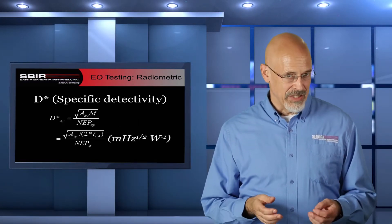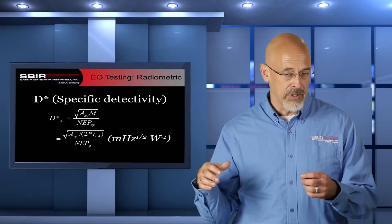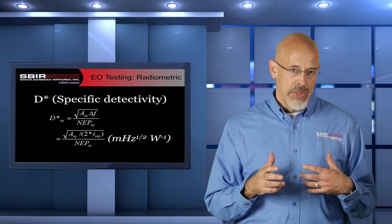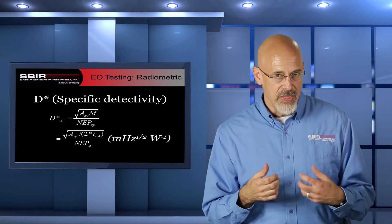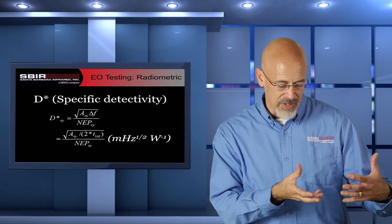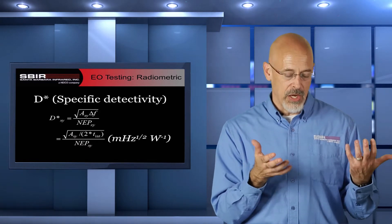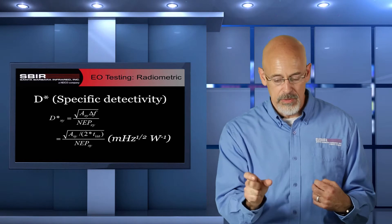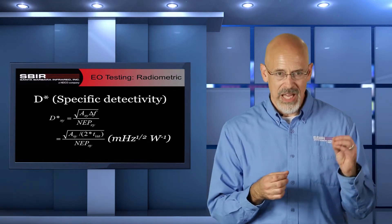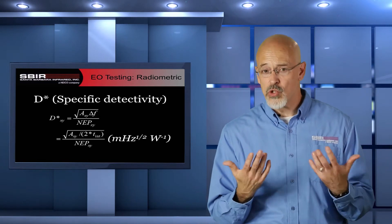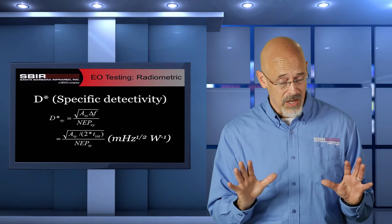Finally, we come to D* — or specific detectivity. The formulation is pretty straightforward: we are taking the noise equivalent power and normalizing it to the area of the detector and the bandwidth of our signal measurement system. These two come into play so that what we end up with is a unit of meter root hertz divided by watts. This allows D* to be higher with better sensors, as opposed to most noise measurements where better sensors produce smaller noise values. It also takes into account the bandwidth of your electronics. The problem is D* is rarely used anymore — it's an older measurement important when we had single element detectors. Now that we're talking about focal planes, there are other measurements that become more critical, such as noise that limits the response of our system.